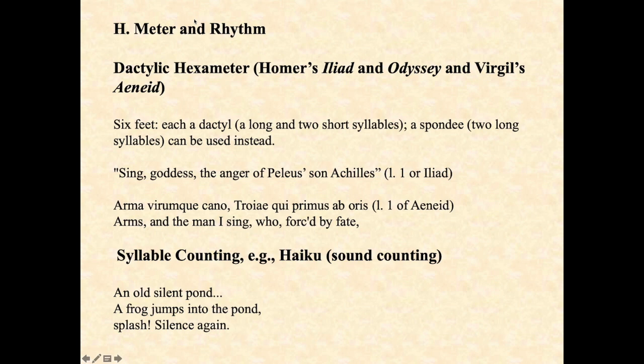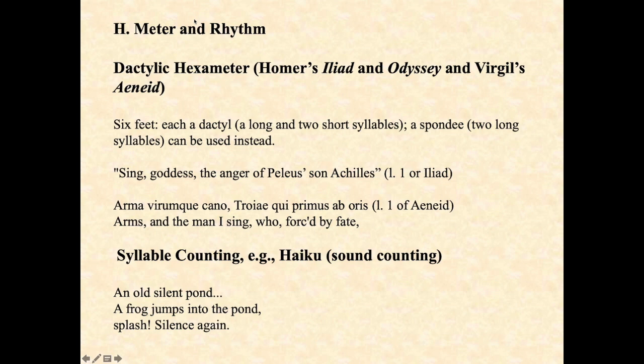If you count the stress in an English translation: 'Sing, goddess, the anger of Peleus, son of Achilles' — that's six feet, six stresses. In the Aeneid: 'Arms and the man I sing, who forced by fate' — again, that's six. In Latin: 'Arma virumque cano Troiae qui primus ab oris' — six feet, each foot having a dactyl, which is a long and two short syllables, or a spondee, two long syllables.